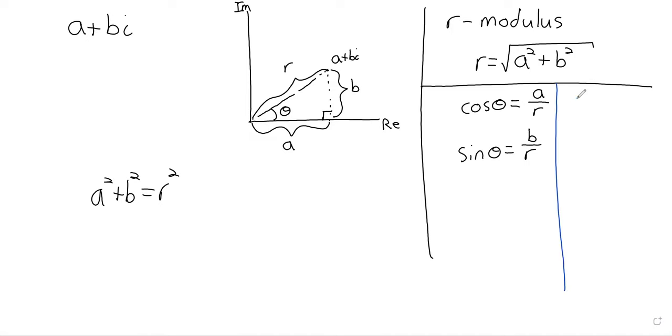So A equals R times the cosine of theta, and B is R times the sine of theta.